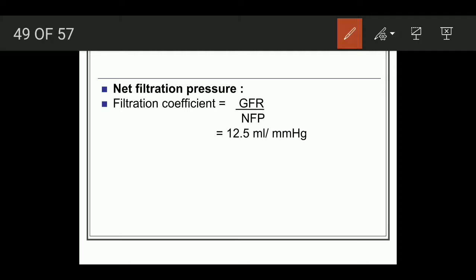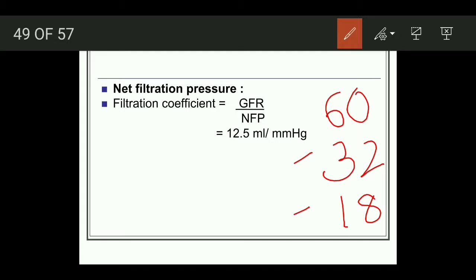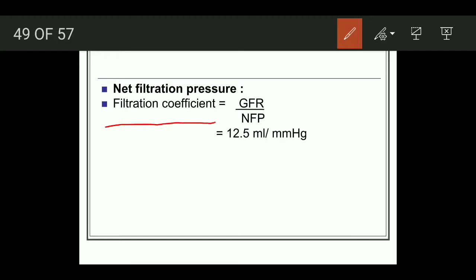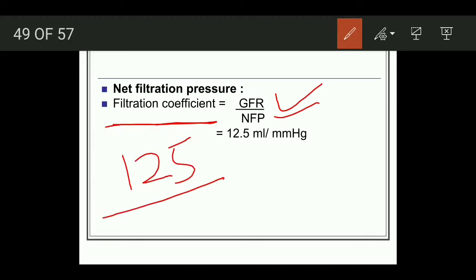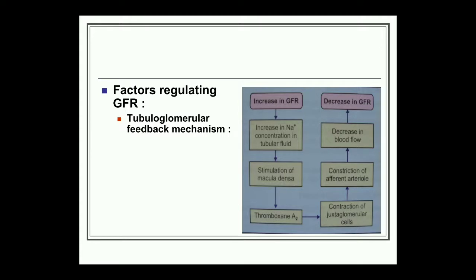Net filtration pressure equals glomerular hydrostatic pressure (60 mmHg) minus glomerular colloid osmotic pressure (32 mmHg) minus Bowman's capsule hydrostatic pressure (18 mmHg), giving 10 mmHg. Filtration coefficient equals GFR divided by net filtration pressure: 125 ml per minute divided by 10 mmHg. This filtration coefficient expresses GFR in terms of net filtration pressure. Next, we discuss factors regulating GFR.